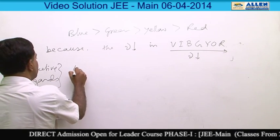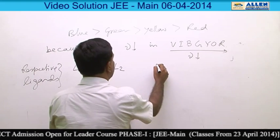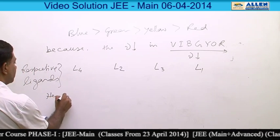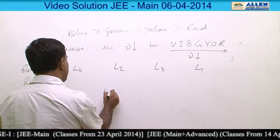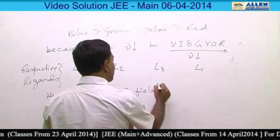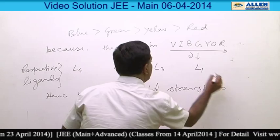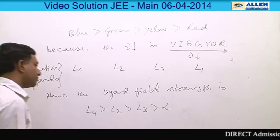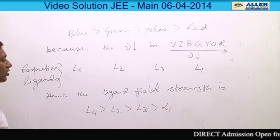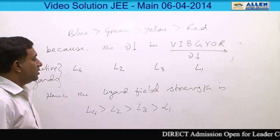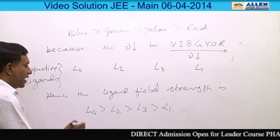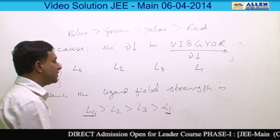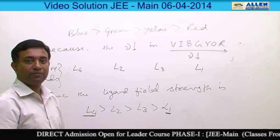The absorbed colors for the ligands are L4, L2, L3, and L1. Hence, the ligand field strength order is: L4 > L2 > L3 > L1. This is because strong field ligands cause a higher splitting gap compared to weak field ligands. L4 is the strongest ligand causing the highest splitting gap, while L1 is the weakest, producing the smallest splitting gap.